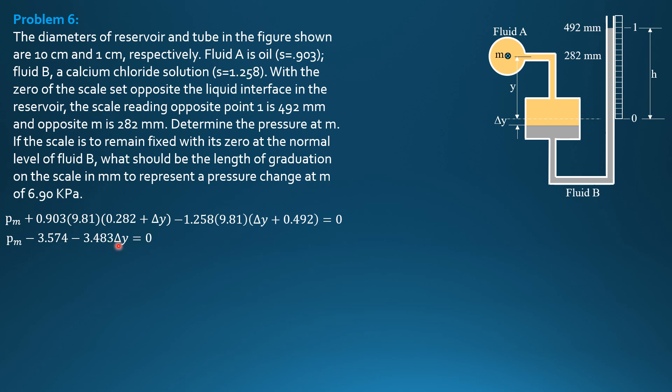Then let's relate delta Y and H. Pi over 4 times diameter of the reservoir, which is 10 square. We will not include pi over 4 anymore because for that tube it is also pi over 4, so they cancel. 10 square times delta Y equals 1 square times H, and H is 0.492 in this case. Therefore, delta Y is 0.00492 meter.